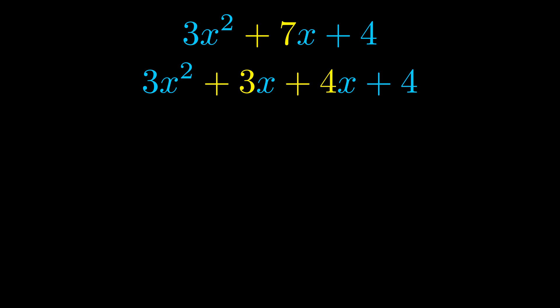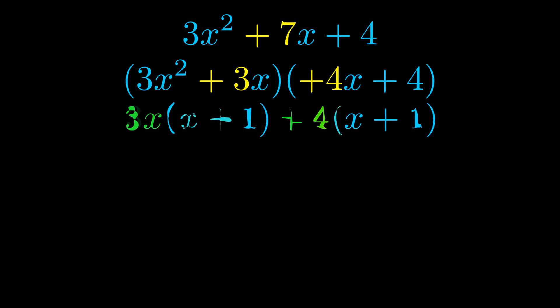Once we've done this, we go ahead and put parentheses around the first term and the last term. And we do that so that we can take the greatest common factor out of both terms. We can see the greatest common factor is now outside in green.